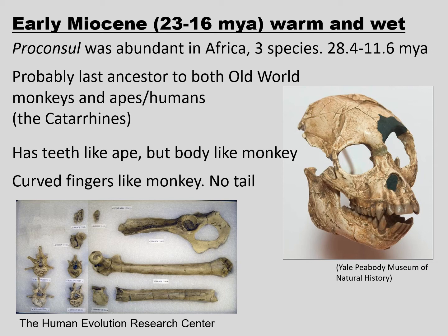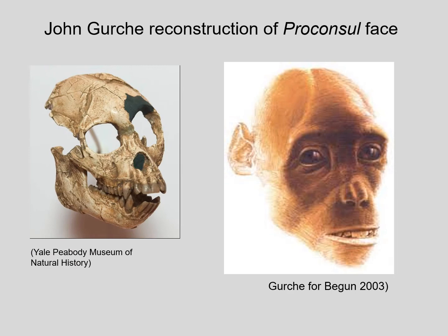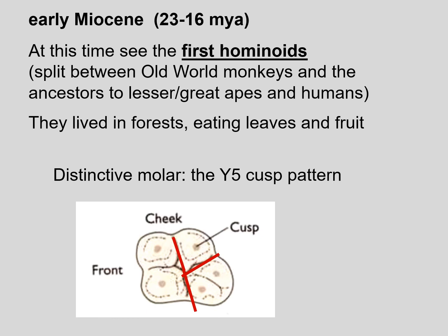Proconsul was abundant in Africa. It has teeth like an ape, but a body like a monkey, and curved fingers like a monkey, but no tail. John Gurche has painted a reconstruction of the Proconsul face based on this skull. It's at this time that we see the first hominoids — that is, the splitting off of the Old World monkeys from the ancestors to our lineage of the great apes, lesser apes, and humans. These first hominoids lived in forests, eating leaves and fruit, and they have the distinctive molar with the Y5 cusp pattern, just like our molars.